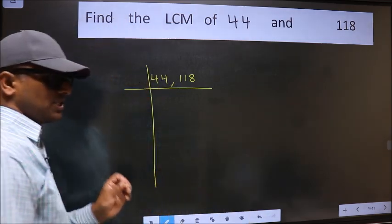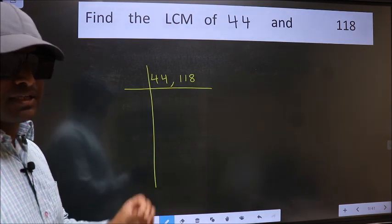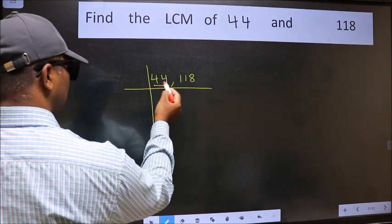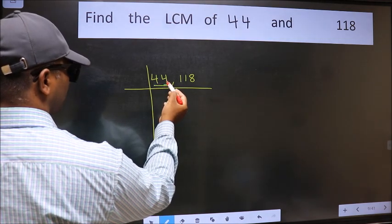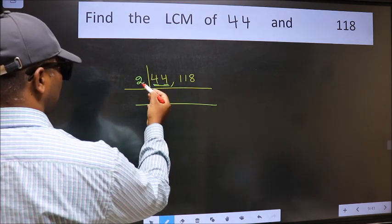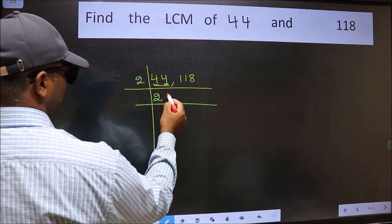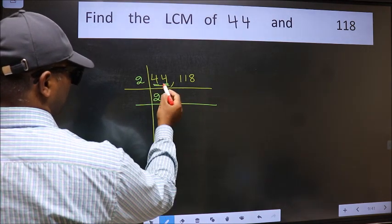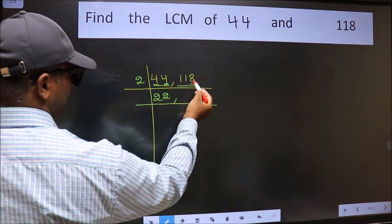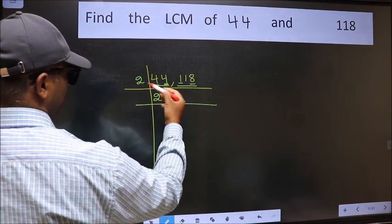Now focus on the first number, which is 44. The last digit is 4, which is even, so take 2. When do we get 4 in the 2 table? 2 times 2 is 4. The other number is 118. The last digit is 8, which is even, so this number is divisible by 2. First number: 1 is smaller than 2, so we get 11. Carried forward: 18. When do we get 18 in the 2 table? 2 times 9 is 18.